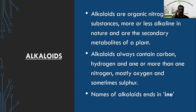Alkaloids always contain carbon, hydrogen, and one or more nitrogen atoms, and sometimes oxygen and sulfur. This is the chemical composition of alkaloids. The name of an alkaloid ends in -I-N-E. So by looking at the name of an alkaloid or a phytoconstituent, we can easily determine whether it is an alkaloid or not — the name always ends in -INE.